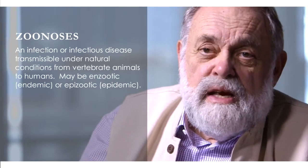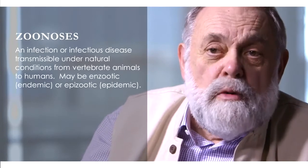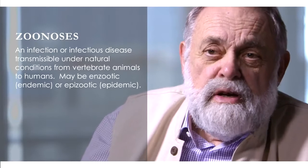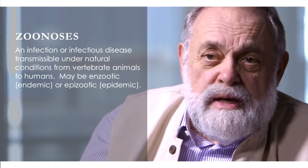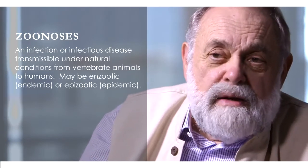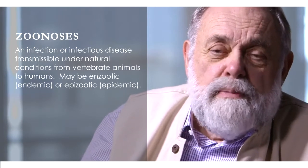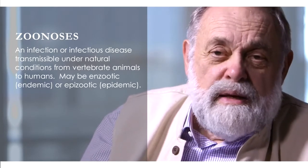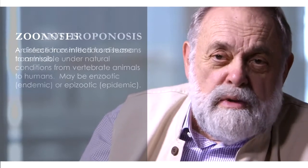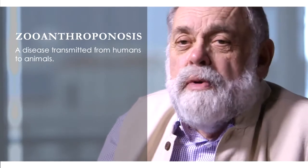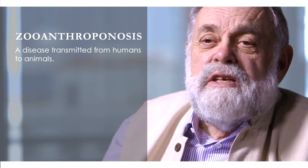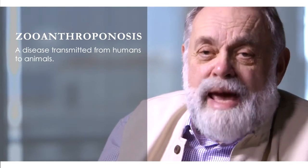In this next chapter, I want to take up the subject of zoonoses. A zoonosis is an infection or an infectious disease that is transmittable under normal and natural conditions from vertebrate animals to humans. It may be enzootic or endemic, or epizootic or epidemic. There's also another term, zooanthroponosis, which is a disease transmitted from humans to animals.